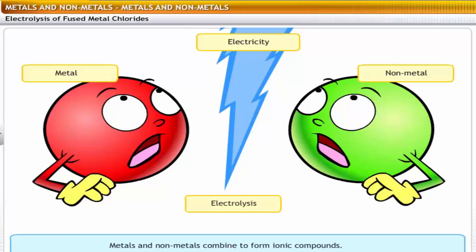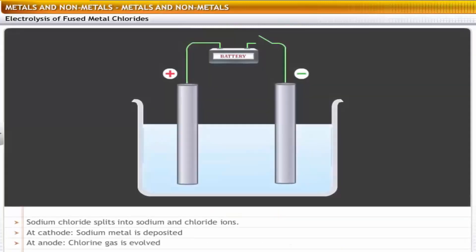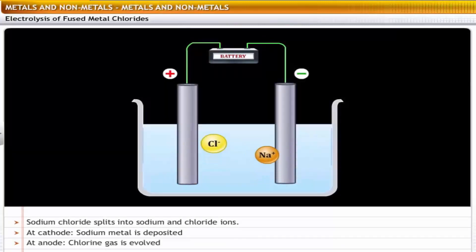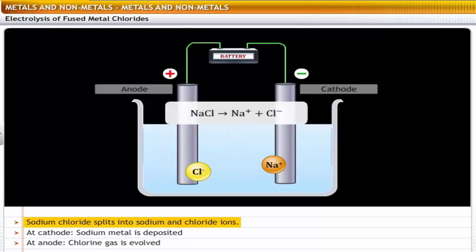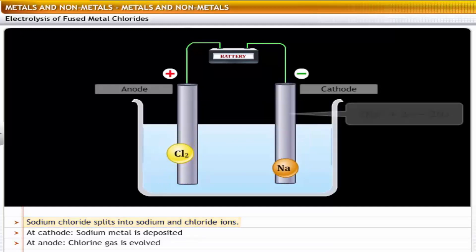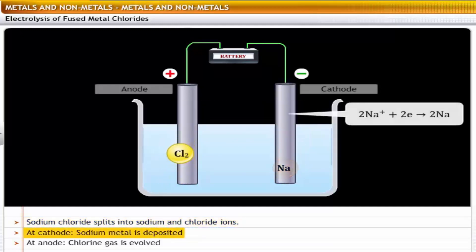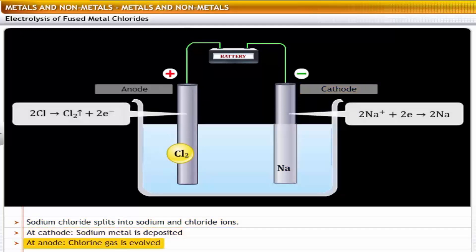To understand how metals and non-metals are separated through electrolysis, let's consider sodium chloride. On passing electricity, sodium chloride splits into sodium and chloride ions. Sodium metal is deposited at the cathode, and the non-metal chlorine gas evolves at the anode.